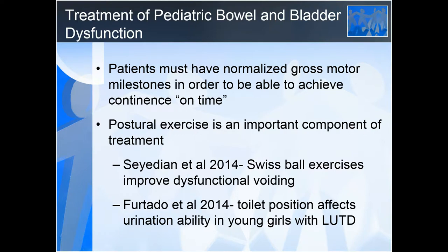Patients must have normalized gross motor milestones in order to achieve continence on time. Pelvic floor physios less familiar with children really need to know the gross motor milestone tables — when should children be crawling, sitting up, walking? If they haven't hit those milestones on time, it could affect their ability to contract and relax pelvic floor muscles. In my intake as a pelvic floor physio for a child, I ask about when they hit gross motor milestones — did they walk early, not crawl, or skip straight to walking? That tells me about how those pelvic floor muscles and diaphragm developed.